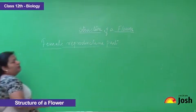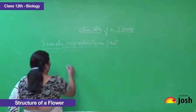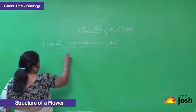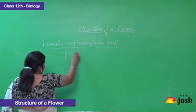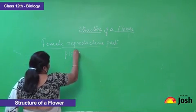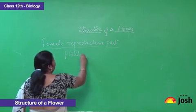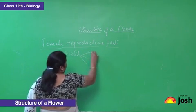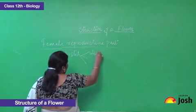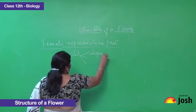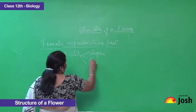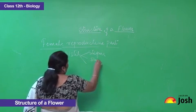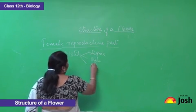The female reproductive part of a flower is pistil. The pistil is made up of three things, that is, stigma, style, and ovary.